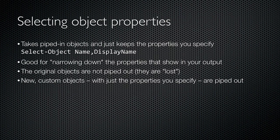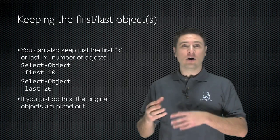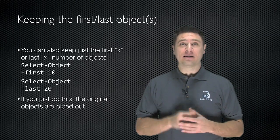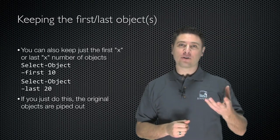Select-Object accepts pipeline objects and just keeps the properties you specify. This is useful for reducing the information the shell displays to just what you want, or for displaying properties that aren't normally shown. The original objects that you pipe in are consumed and are not piped back out. Instead, custom objects with just the properties you specified are output. Because you lose the original objects this way, you'll want Select-Object to be one of the last cmdlets in your pipeline. You can also have Select-Object keep the last 10 or the first 10, or however many you need.